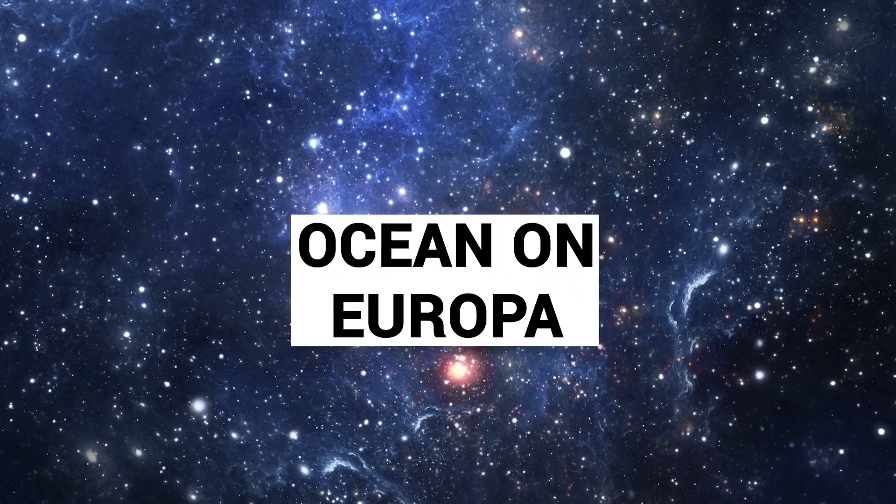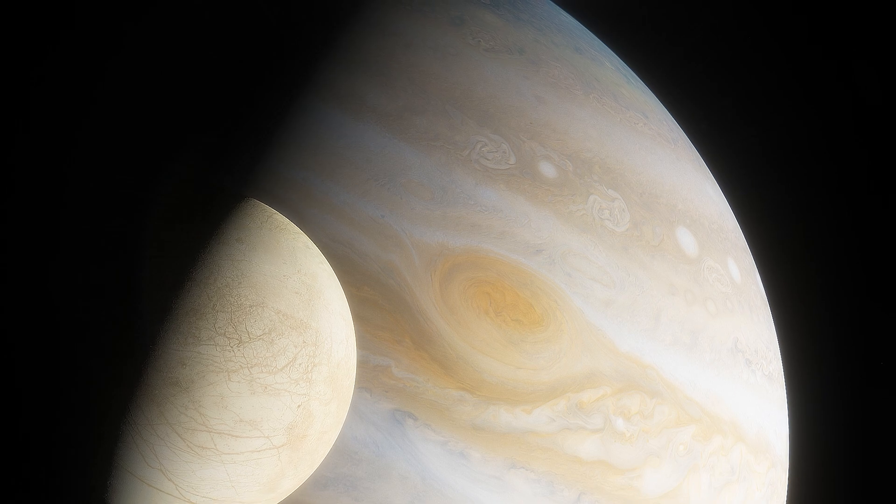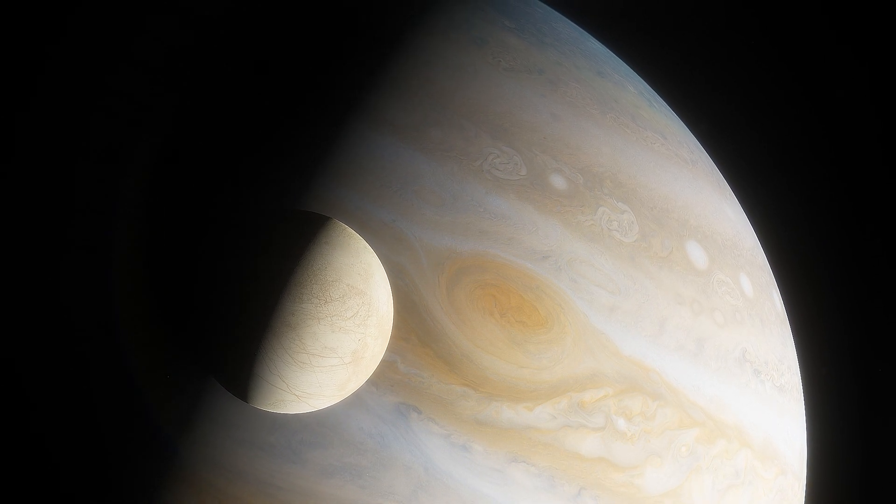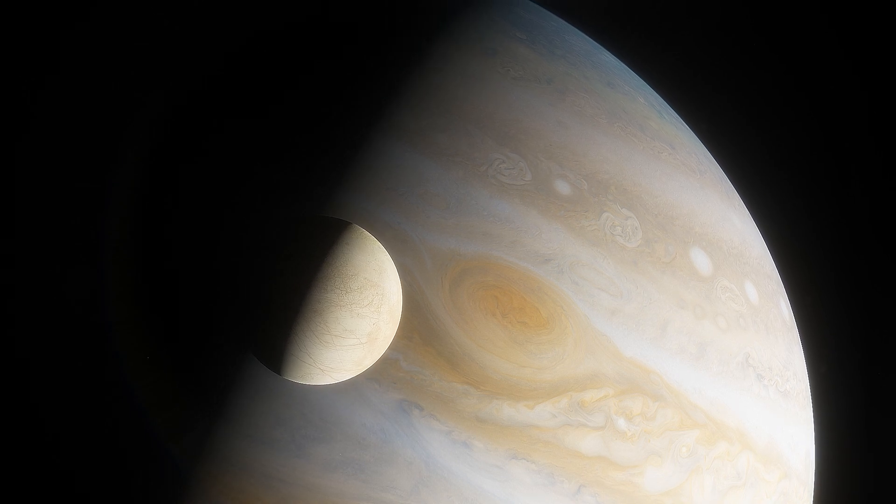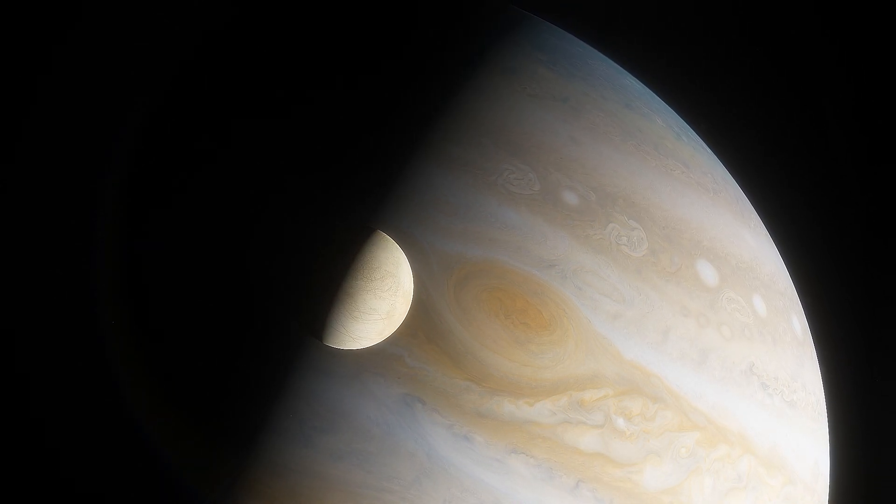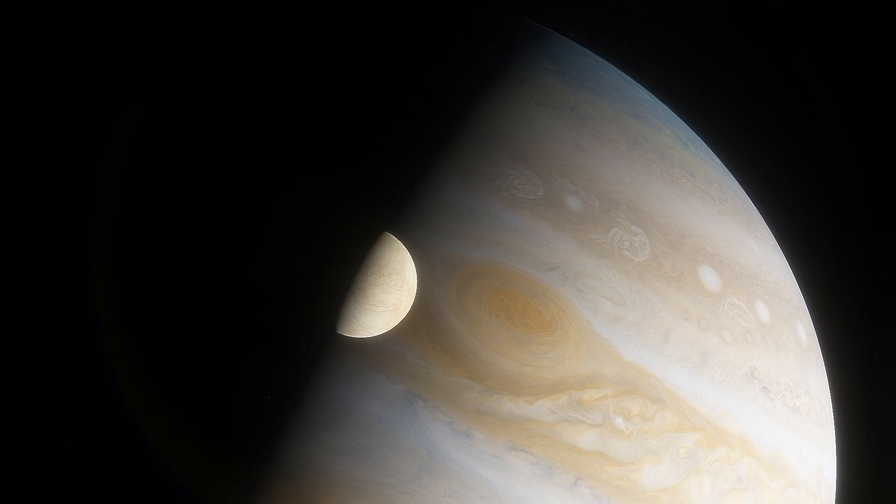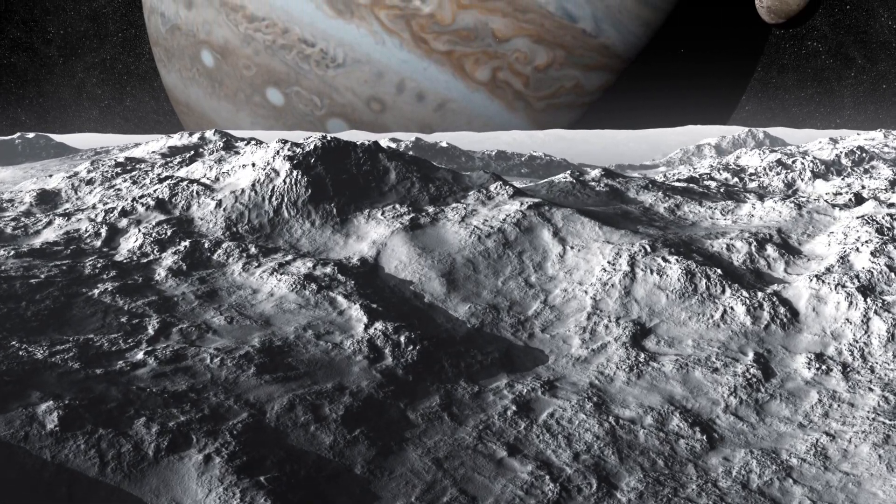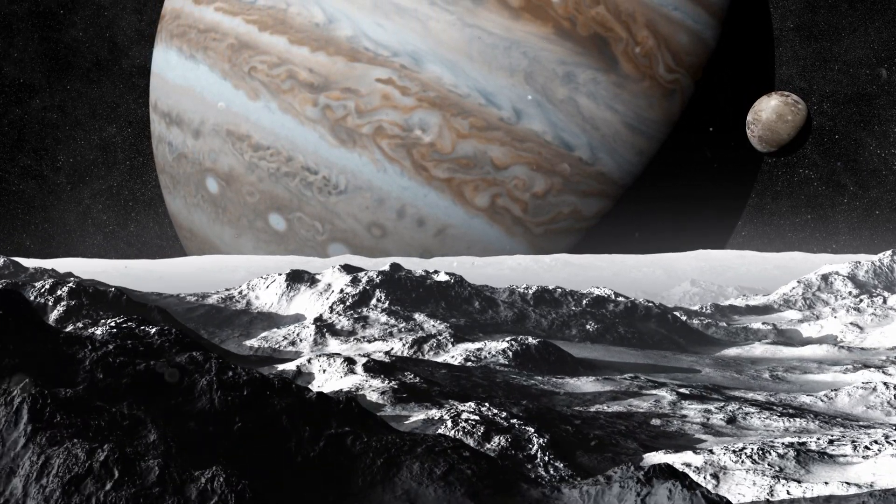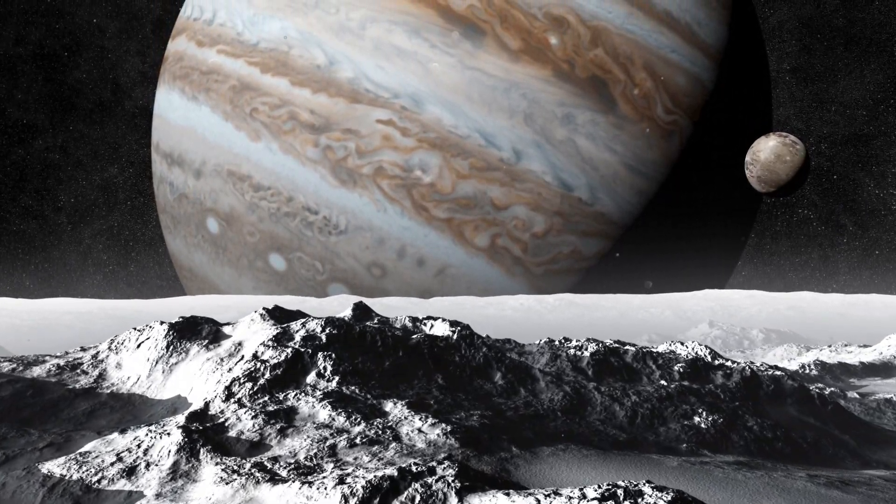The Secret Ocean on Europa. Europa, one of Jupiter's moons, has an icy shell covering a massive ocean underneath. The gravitational forces from Jupiter generate tidal friction within Europa, keeping the water below warm and potentially habitable. Many scientists now see Europa as one of the best places to look for extraterrestrial life in our solar system.